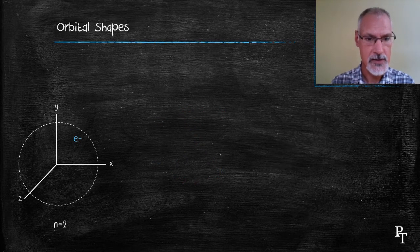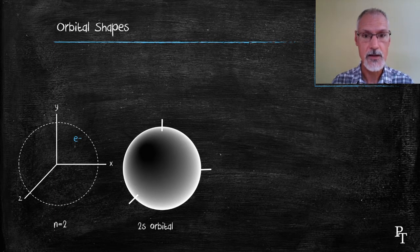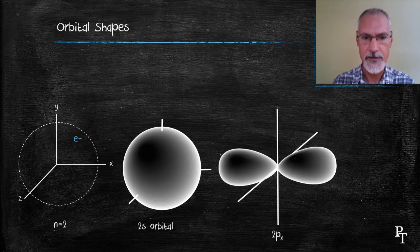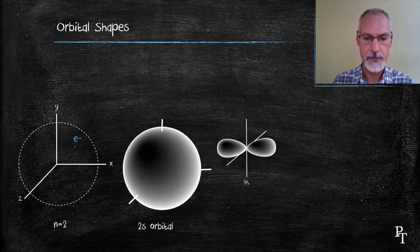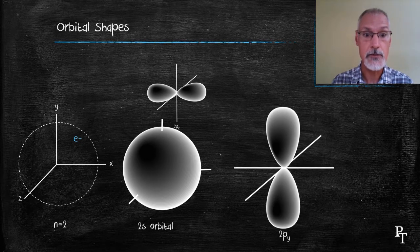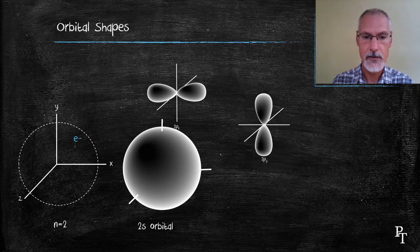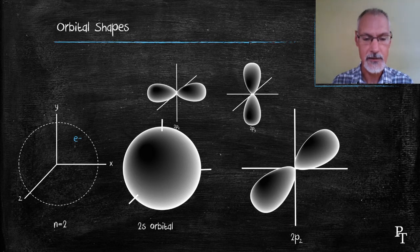When you move to the second energy level, we have a larger spherical orbit where we're likely to find the electron. But in addition to that one, there are some other orbitals that also exist at the second energy level — what's called the 2px orbital, a lobe of probability that exists to the left and to the right of the nucleus. In addition to the 2px orbital, you also have the 2py orbital, where the electron could exist either above or below the nucleus. And a third p orbital, the 2pz orbital, where the electron could exist out of our page or into our page, in front or behind the nucleus.